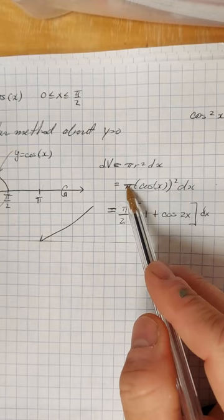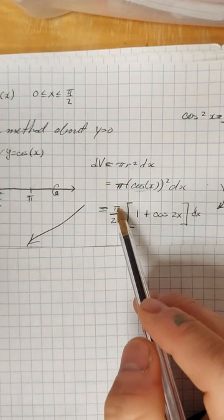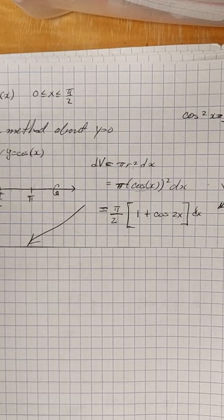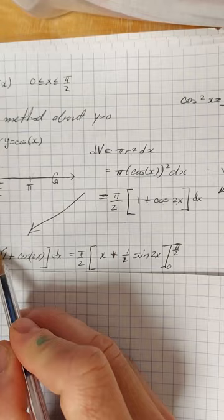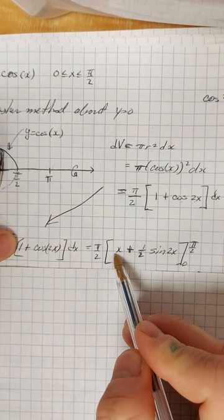Plugging that back in, we have pi over 2 — the pi over 2 comes from the 1/2 in the reduction formula. So we have pi over 2 times (1 plus cosine 2x), and we're going to integrate this over the bounded region from 0 to pi over 2.